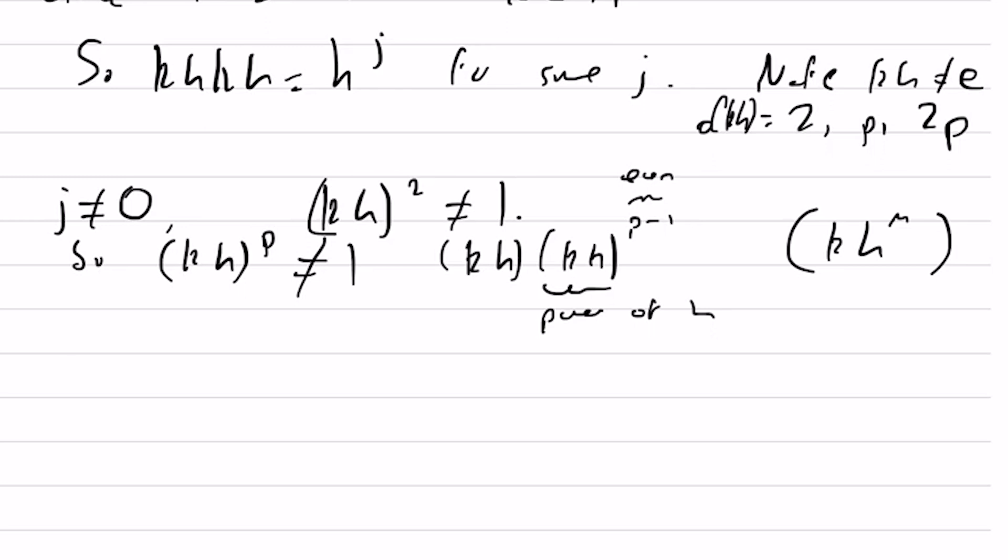Therefore, it doesn't have order 2 or p, so the order of kh must be 2p. And since we have an element of order 2p, this is the whole group, the group generated by kh. Therefore, it's a cyclic group.